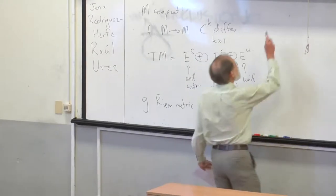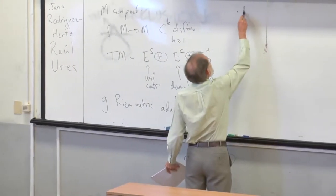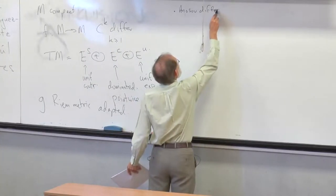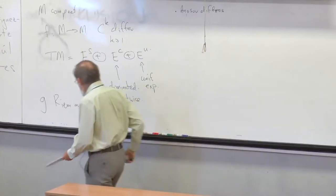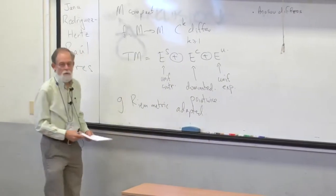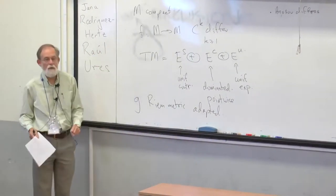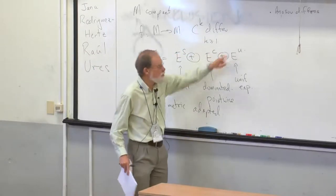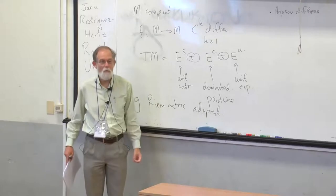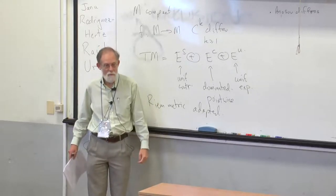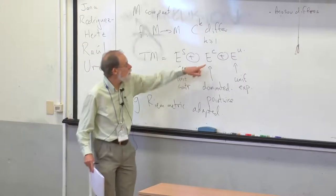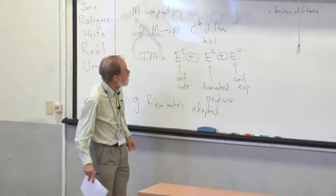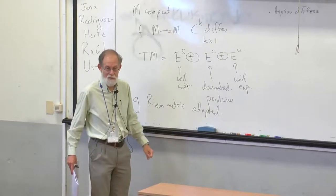There are some examples. One is Anosov diffeomorphisms. Before I talk about examples, I want to say something about the structure that comes from this. As well as using S, C, and U as labels for the bundles, I also want to think of them as the dimensions of the bundles. In particular, the center bundle is C-dimensional, and later in this talk C is going to tend to be small.